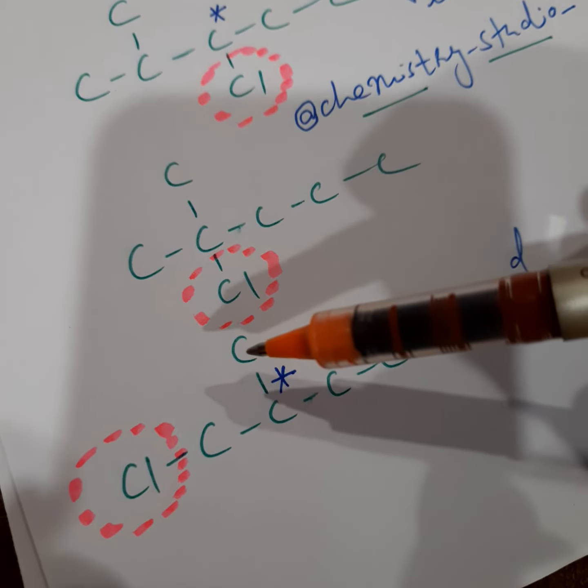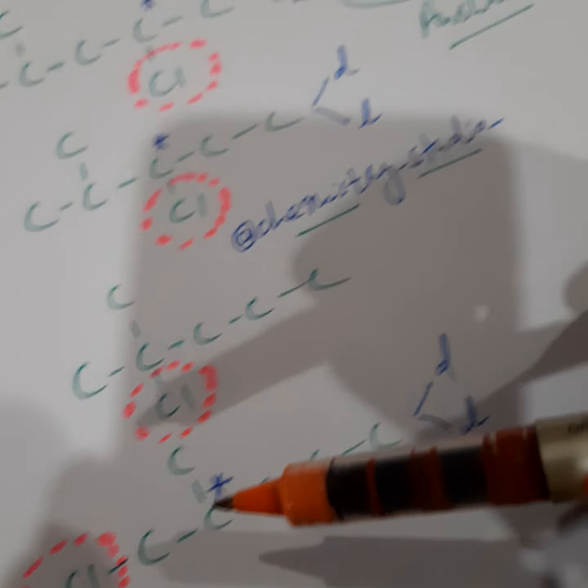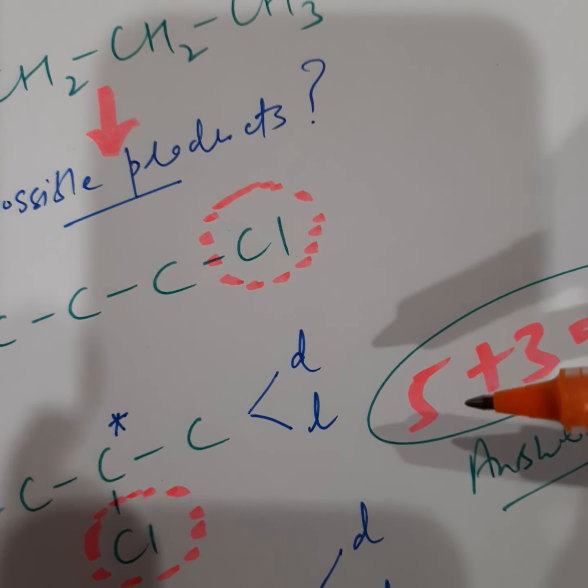Now we can't put chlorine on this carbon atom because this position and this position are one and the same thing. So the first answer is five without considering any stereoisomers.